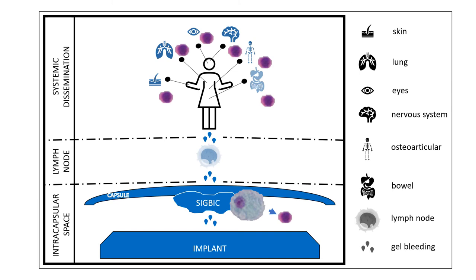But when we have a new inflammation inside the capsule, we are going to have this stimulation of the T lymphocytes, and the T cell is going to act against all of the silicone in the body. So we're going to have target organ reactions and target complaints from the silicone.